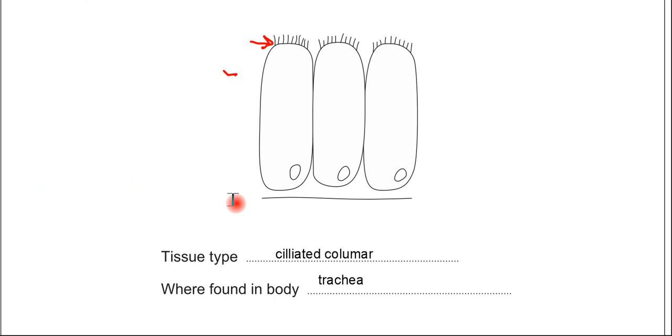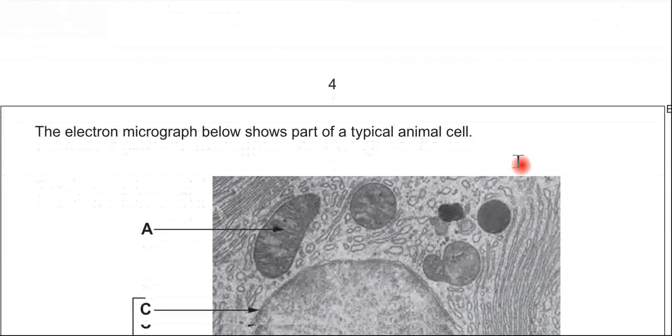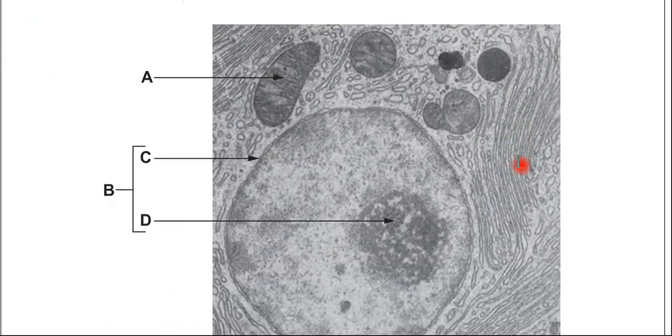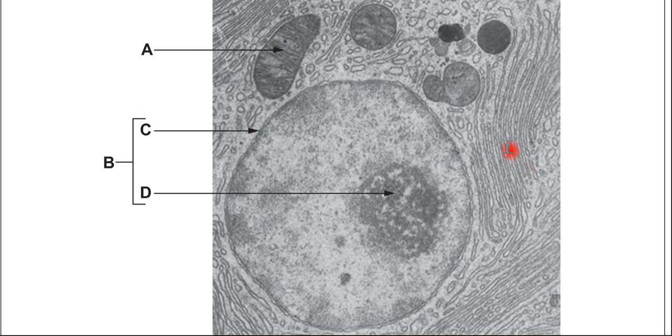So I've typed in the answers there for this tissue type. The other locations that the examiner would accept would be in the fallopian tubes, or also known as the oviducts. So, if we go on to the next part, we have an electron microscope image here of a cell.